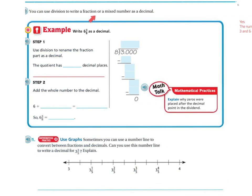You can use division to write a fraction or a mixed number as a decimal. So if we're going to write 6 and 3 eighths as a decimal, we're going to use division to rename the fraction as part of a decimal. So the quotient has 3 decimal places.